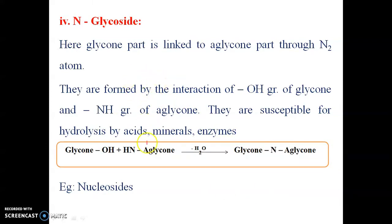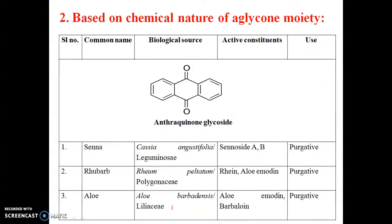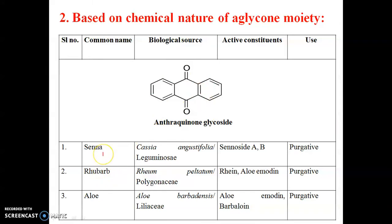Next is N-glycoside, where glycone and aglycone are attached by a nitrogen atom; nucleosides are an example. The second classification is based on the chemical nature of the aglycone moiety. The first type is anthraquinone or anthracene glycoside — the anthracene nucleus and its oxidized form anthraquinone give it the name. The classical example is Senna.